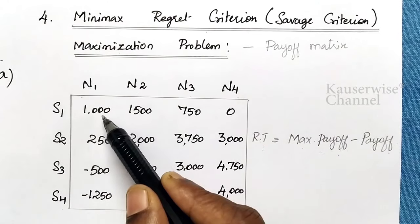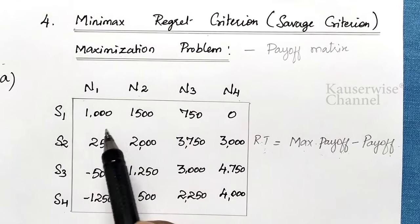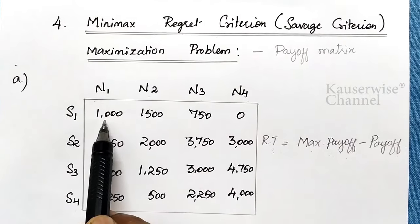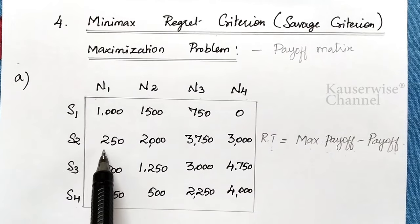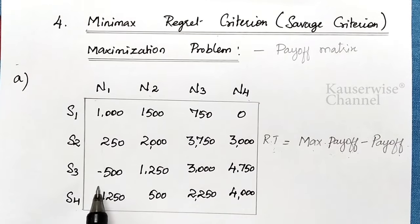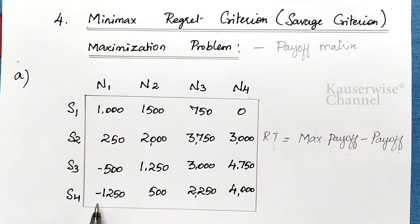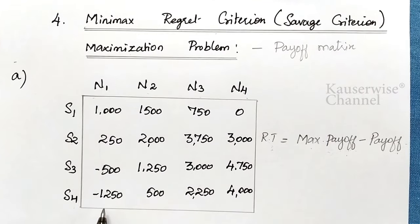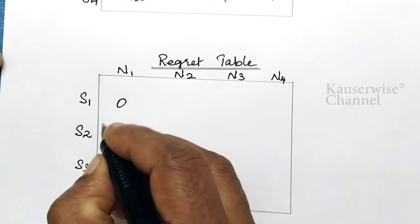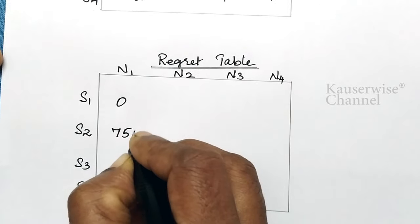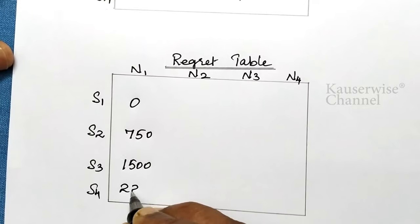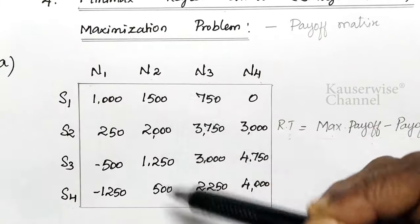Look at the first column. The values are 1000, 250, minus 500, minus 1250. The maximum payoff is 1000. So: 1000 minus 1000 equals 0; 1000 minus 250 equals 750; 1000 minus (minus 500) equals 1500; 1000 minus (minus 1250) equals 2250. These are the new values in the regret table for the first event: 0, 750, 1500, 2250.